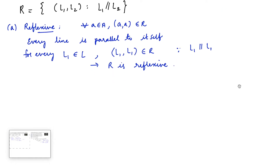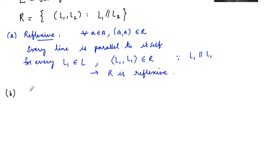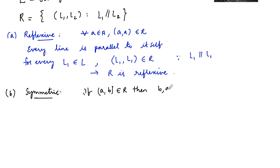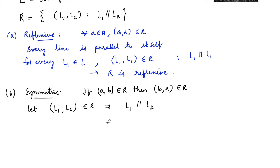Now let us check for symmetric. The symmetric condition is that if (a, b) belongs to R, then (b, a) must belong to R. So let (L1, L2) belong to R, which implies L1 is parallel to L2. If one line is parallel to another, we can also say the other line is parallel to the first, that is L2 is parallel to L1. So (L2, L1) belongs to R, and hence R is symmetric.